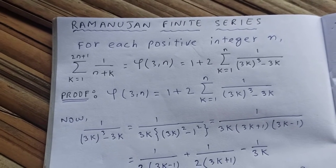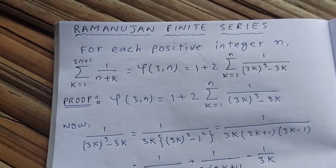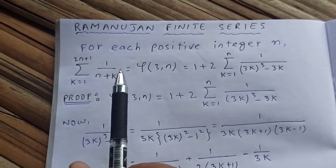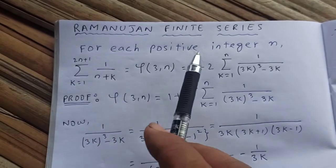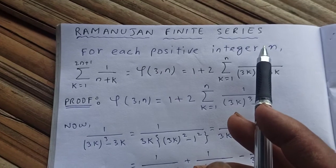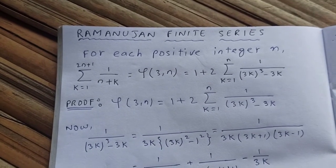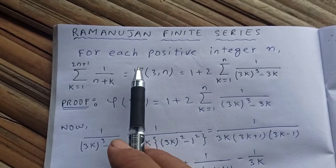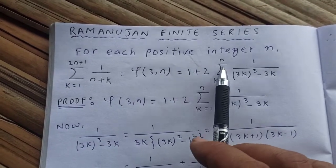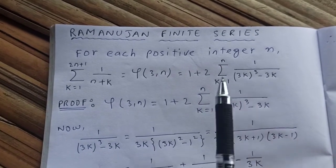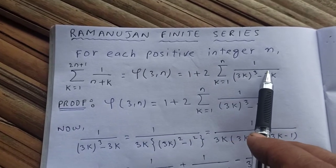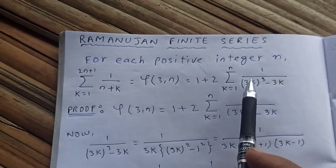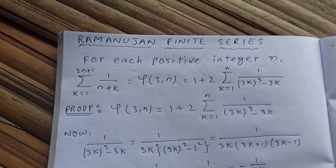Hello guys, thanks for watching my video. Today let's see another Ramanujan finite series — I think this is the second one. The question says that for each positive integer n, we are going to prove that the sum from k equal to 1 to 2n+1 of 1/(n+k) equals 1 plus 2 times the sum from k equal to 1 to n of 1/(3k·whole·k minus 3k). Ramanujan represented this series by φ(3, n), where 3 refers to this part and n refers to this part.